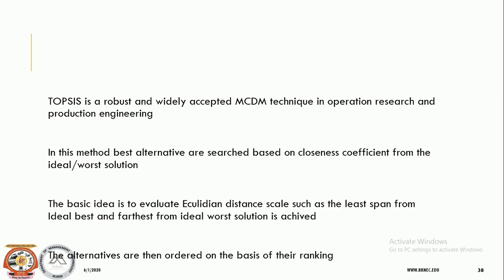TOPSIS is a very robust and widely accepted MCDM technique in operations research and production engineering. It selects the best alternative based on closeness coefficient from the ideal and worst solution — the chosen alternative should be very close to the ideal solution and far away from the worst solution. The basic idea is to evaluate Euclidean distance for calculating the distance from the ideal best and ideal worst solution.